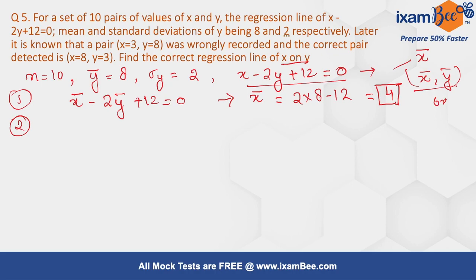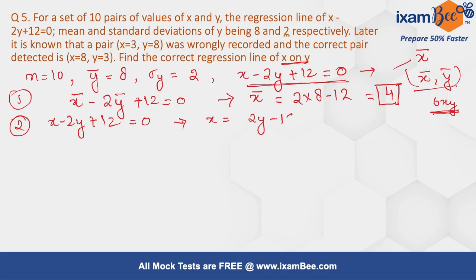Another step is to find the regression coefficient bxy. Since the line is for x on y, if we rearrange the equation 2x minus 2y plus 12 equals zero, it becomes x equals 2y minus 12. So the regression coefficient bxy equals 2. Now we have the value for x̄ equals 4 and bxy equals 2.